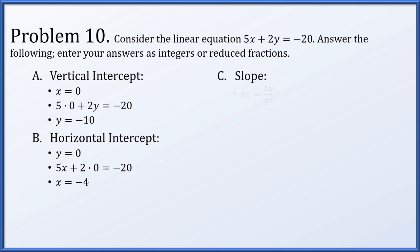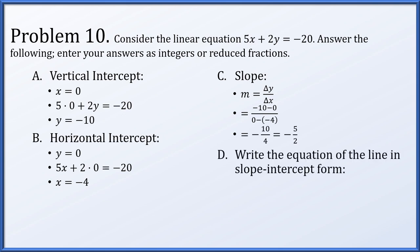We also compute the slope using the two intercept points: (0, negative 10) and (negative 4, 0). Computing delta y over delta x simplifies to negative 5 over 2. Finally, in slope-intercept form: using slope negative 5 halves and intercept negative 10, the equation is y equals negative 5 halves x minus 10.